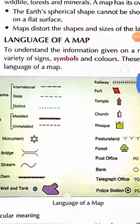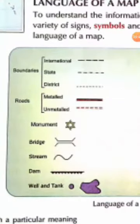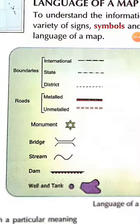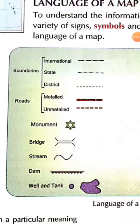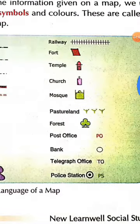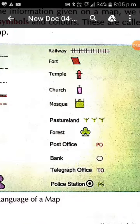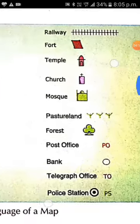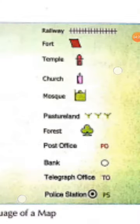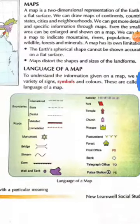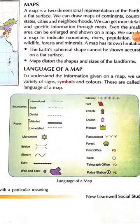Here some symbols are given. You can see symbols for international and state boundaries, district, metalled road, unmetalled road, monuments, bridge, stream, dam, well and tank. These symbols are used for these objects. Also the railway, fort, temple, church, mosque, land, forest, post office, bank, telegraph office and police station — these all have different symbols to show on the map. These are the language of the map, which are generally used on maps.